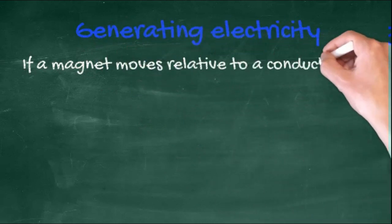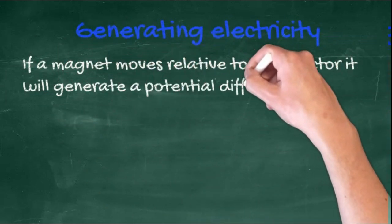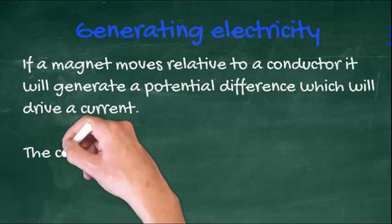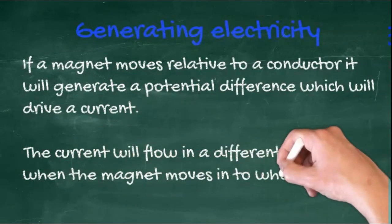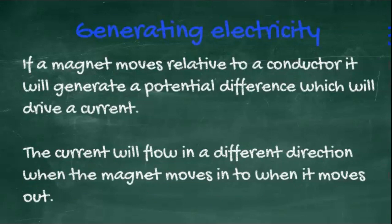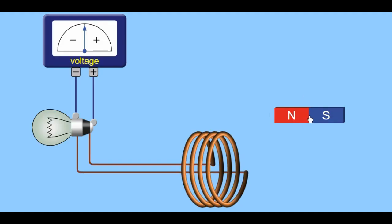Generating Electricity. If a magnet moves relative to a conductor, it will generate a potential difference, which in turn will drive a current. When the magnet goes in, the current will flow one way. When it comes out, it will flow the other.